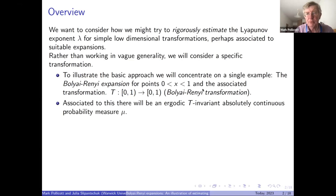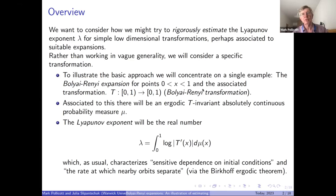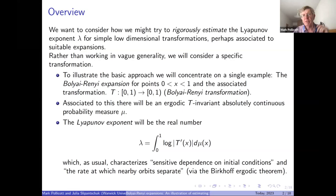Associated to this transformation, which gives you the expansion for a typical point, there's going to be an absolutely continuous invariant measure, and it's this measure for which we associate the Lyapunov exponent. The Lyapunov exponent is just measuring the instability of the transformation: you take a typical point, iterate the transformation, and nearby points separate at a speed given by the Lyapunov exponent almost everywhere.